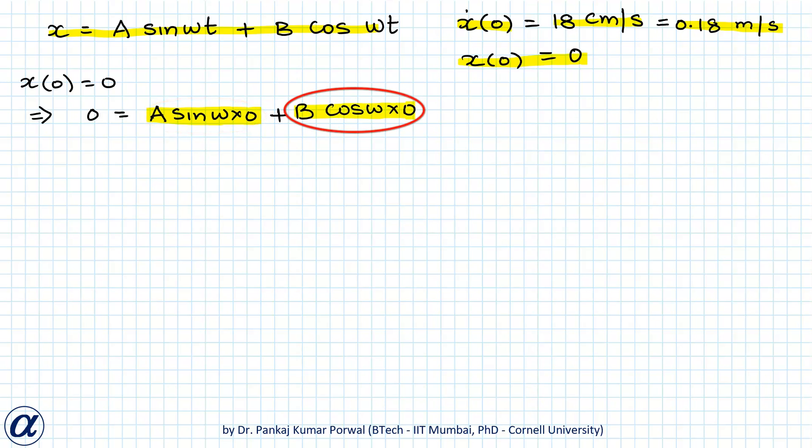So this gives me equals to 0 plus B, so this gives me B equals to 0. That means this term will become equals to 0 so I am left with only x equals to A sin ωt.